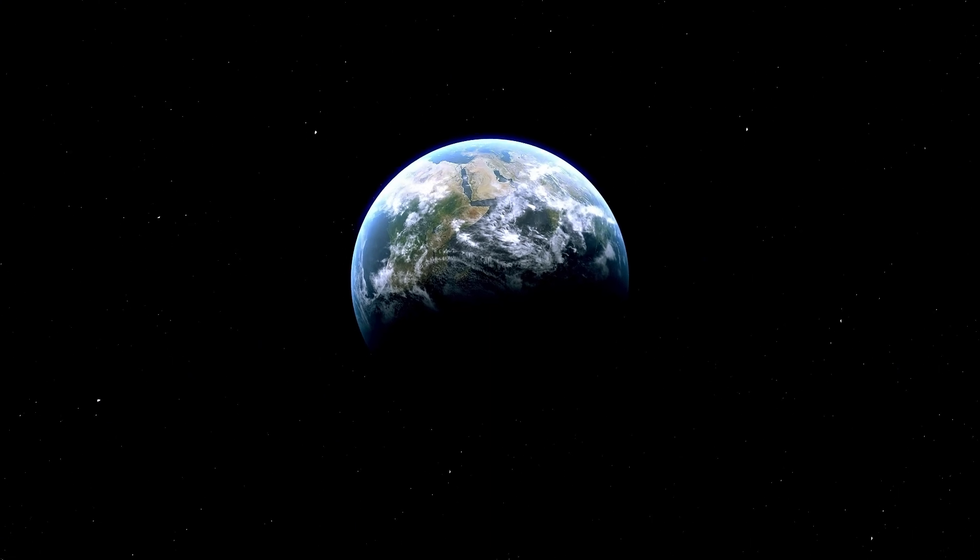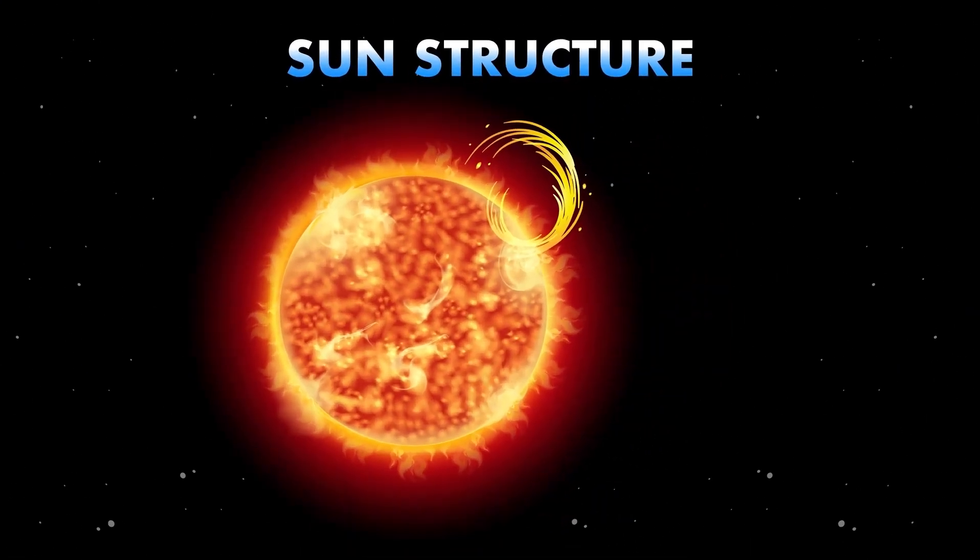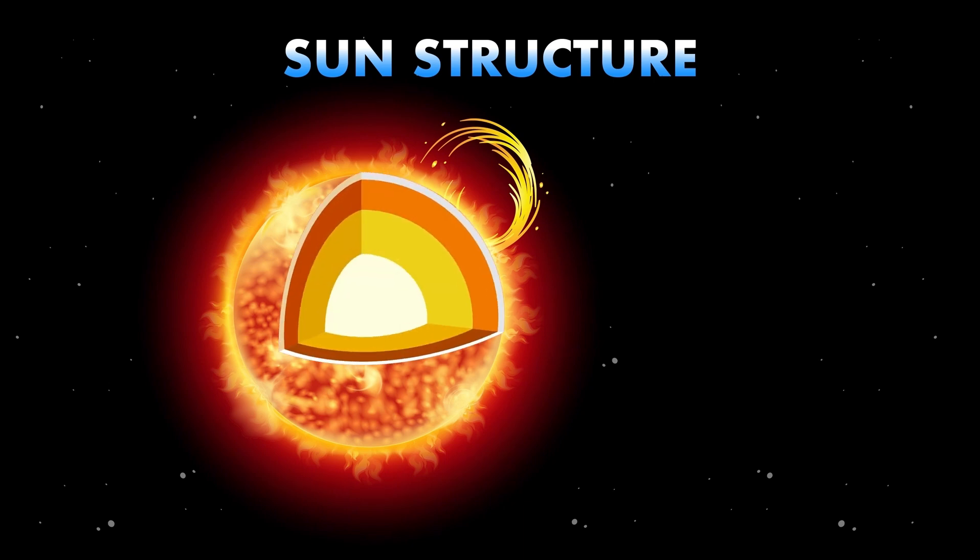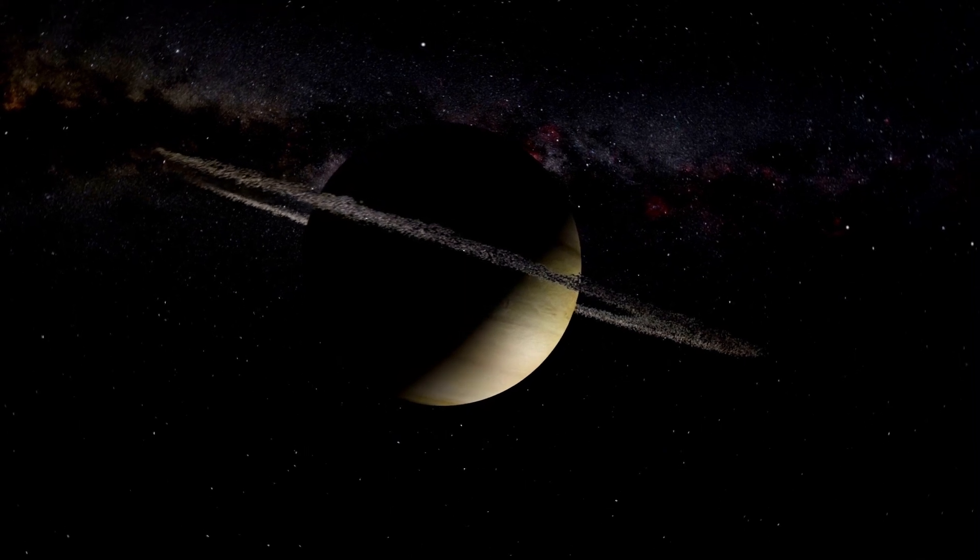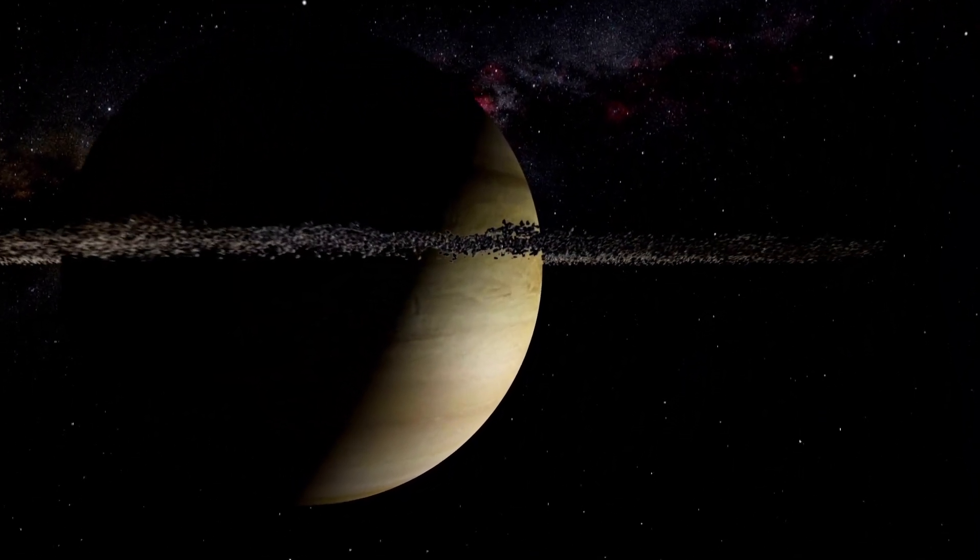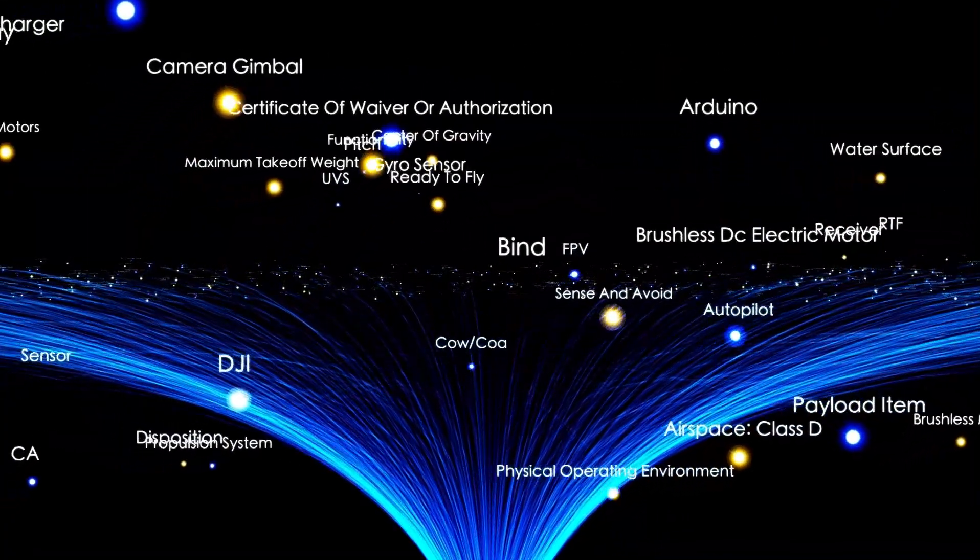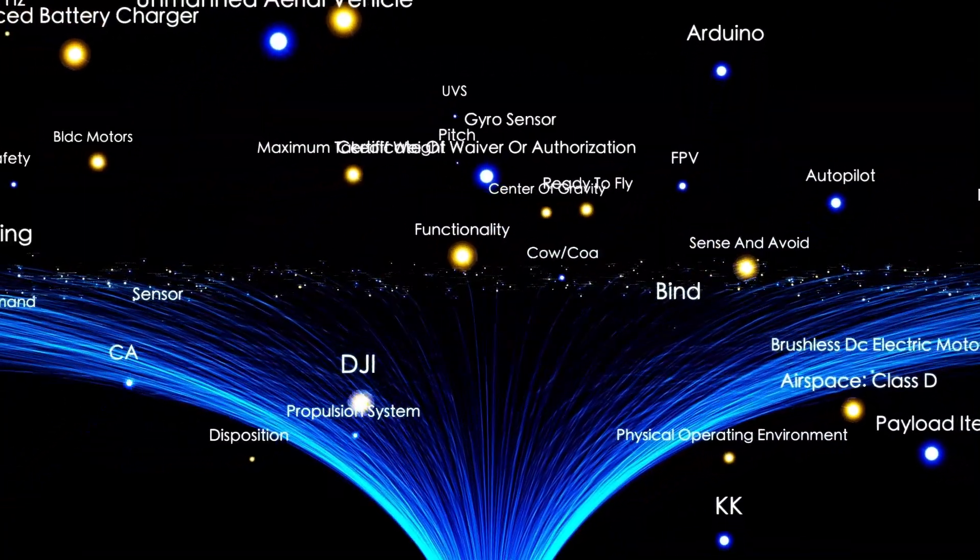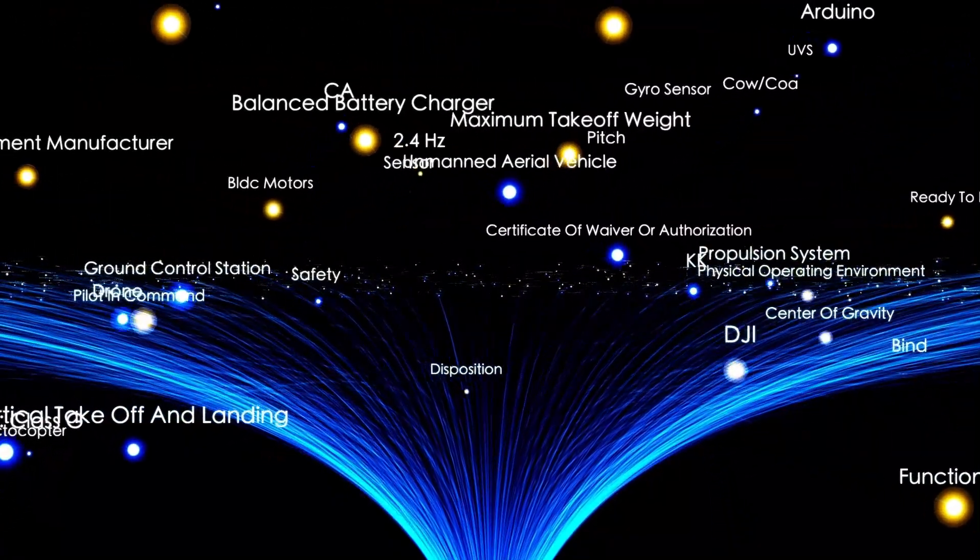But wait, there's more. Proxima Centauri b is not alone in its journey around the red dwarf star, it has a fellow traveler, the super-Earth Proxima Centauri c. And who knows what other secrets this star system holds, perhaps another companion that we have yet to discover. And the mysteries don't stop there. Proxima Centauri b receives just about the same amount of energy from its star as our Earth does from the Sun. Could this mean that there's water on its surface, perhaps even life?